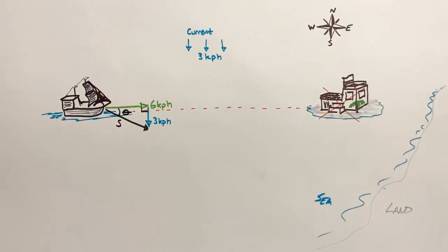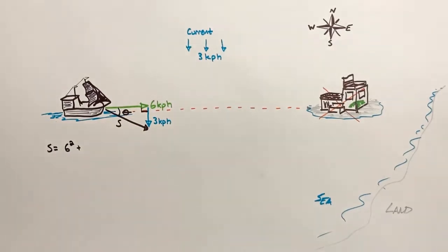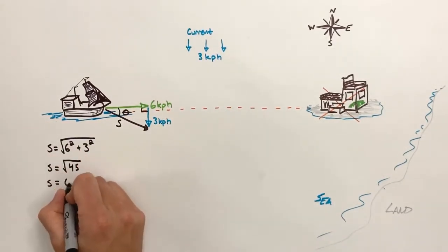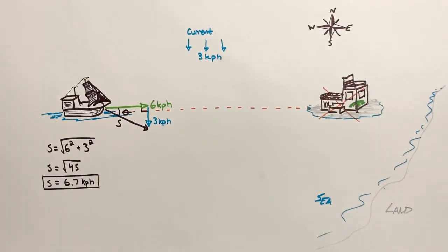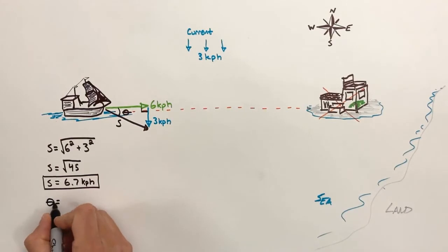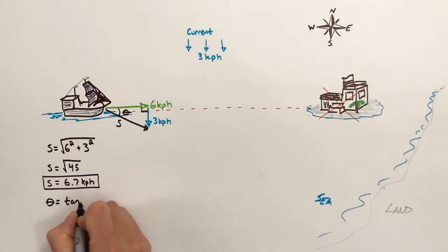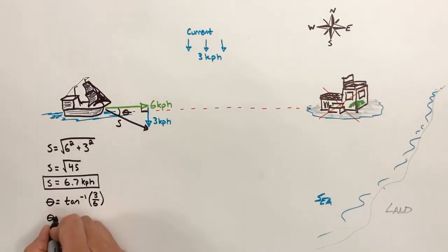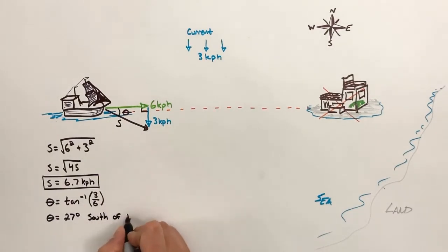To find the direction the ship is actually going to travel, we need to add together these two vectors. The 6 kilometers per hour is the horizontal component, and the 3 kilometers per hour is the vertical component of the speed. When we combine these two velocity vectors using the Pythagorean theorem, we find the actual speed of the ship is 6.7 kilometers per hour. That speed is not directly toward the fortress — it's slightly southeast. So next we're going to find the actual direction the ship is traveling using inverse tangent. The inverse tangent of 3 over 6 means the ship is going to be traveling at 27 degrees south of east.